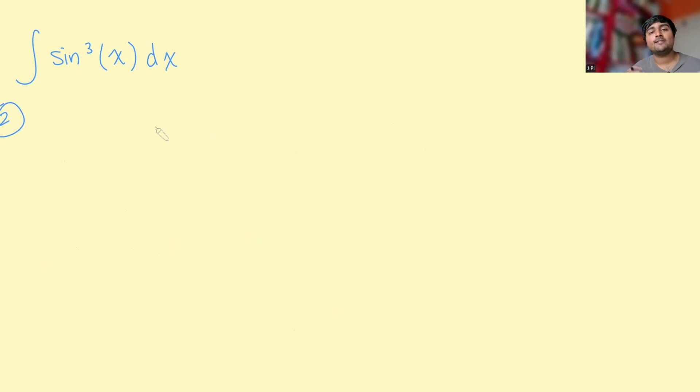So now this method involves us using the triple angle formula for sine x. Don't worry, this isn't one that you're supposed to remember or expected to remember, but we can quickly derive this. Sine of 3x is the same as sine of 2x plus x, which is the same using our compound angle formula, sine 2x cos x plus sine x times cos 2x.